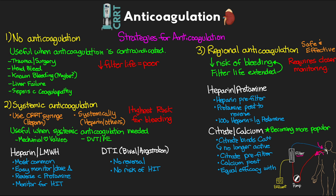Sodium citrate has equal efficacy to heparin with much less risk. Monitoring involves evaluating both a post-filter ionized calcium and a patient ionized calcium. We draw blood just after it goes through the filter and check an ionized calcium level — it should be critically low because calcium should be fully bound by the citrate. If the post-filter ionized calcium is too high, we're not binding enough calcium and need to increase the citrate infusion rate, and vice versa. We then draw a patient ionized calcium targeting a normal level; if it's too low we increase the calcium infusion rate.